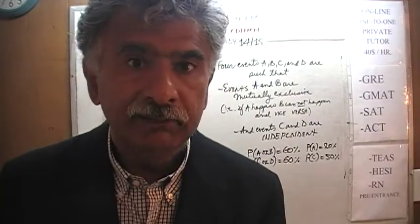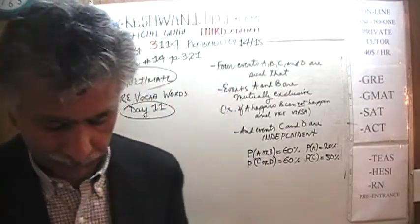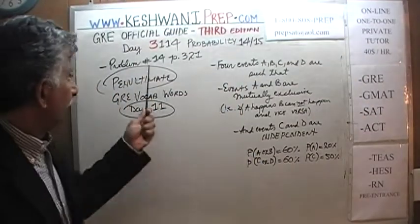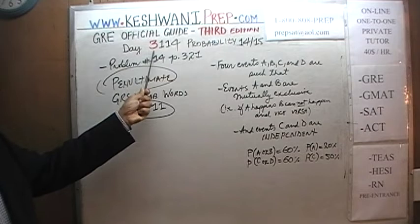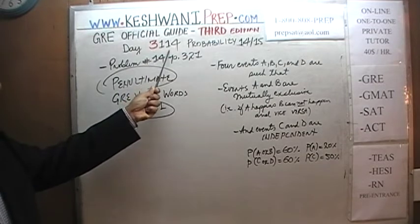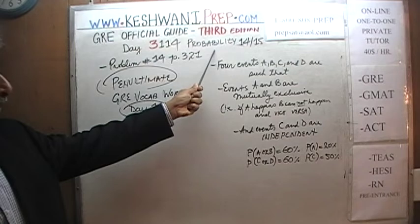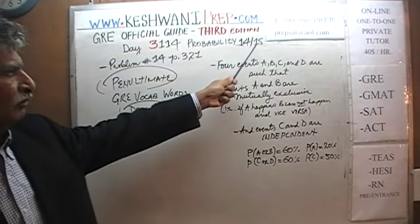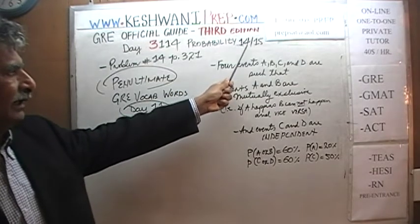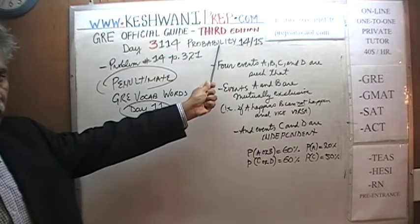Today is our lesson number 114, day 3114 — the 3 is to signify that we are in the third edition, day 114. We are covering the topic of probability and today is our 14th lesson in the series of 15, the penultimate lesson — the penultimate video on the topic of probability.